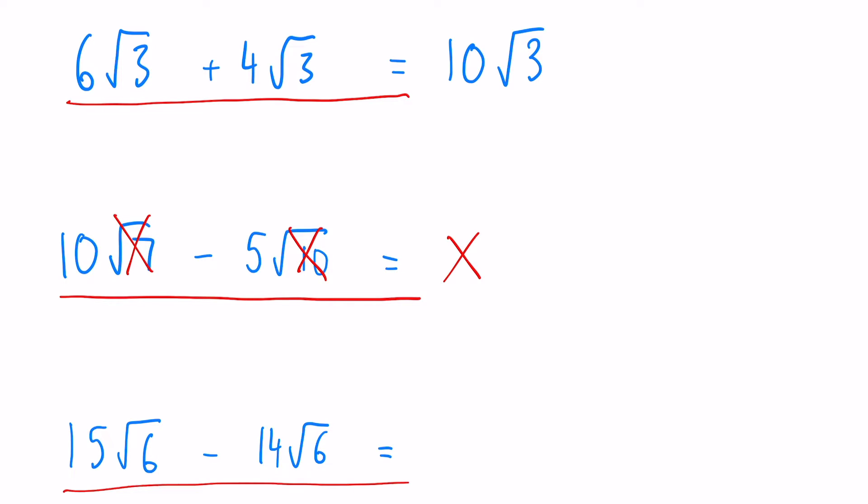And a subtraction one this time. So 15 root 6 minus 14 root 6. Now here you could write 1 root 6, but a lot of the time just like in everything else in maths when there's a 1 at the front, we can normally just write root 6. We don't need that 1.